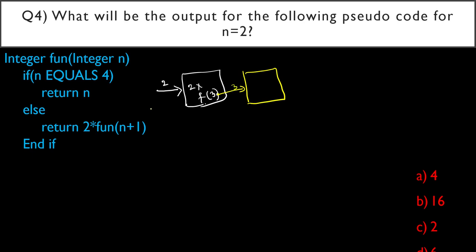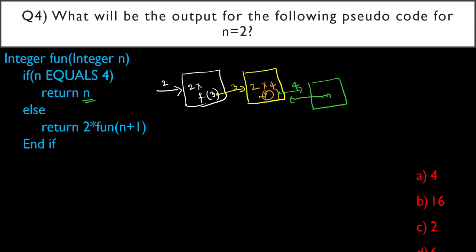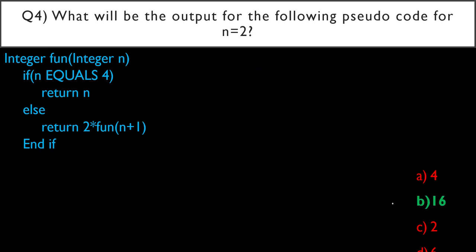For fun(3): 3 ≠ 4, so returns 2 * fun(4). For fun(4): n = 4, so returns n = 4. Therefore fun(4) = 4. So fun(3) = 2 * 4 = 8. And fun(2) = 2 * 8 = 16. Option B, 16, is the correct answer. Just follow the recursion traces.